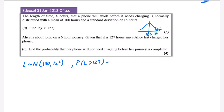Using the normal distribution calculator with a lower bound of 127, a large upper bound, sigma of 15, and mean of 100, the probability that L is greater than 127 is 0.0359 to four decimal places. Now for the more interesting part: Alice is about to go on a six-hour journey. Given that it is already 127 hours since Alice last charged her phone, find the probability that her phone will not need charging before her journey is completed.